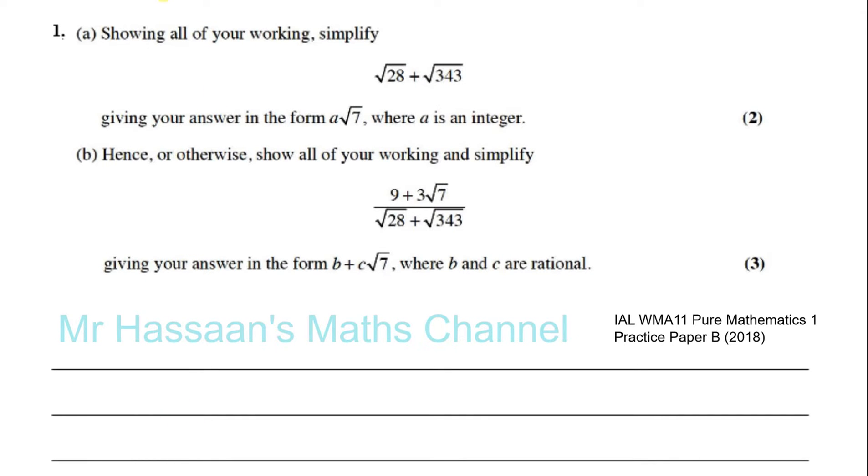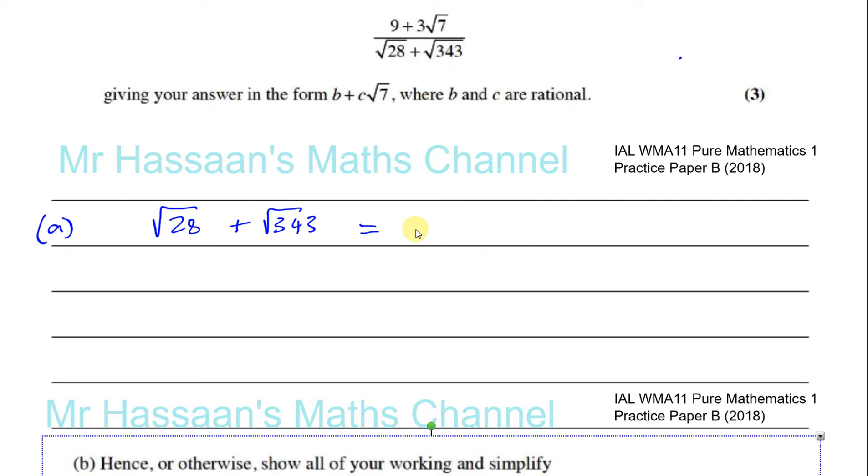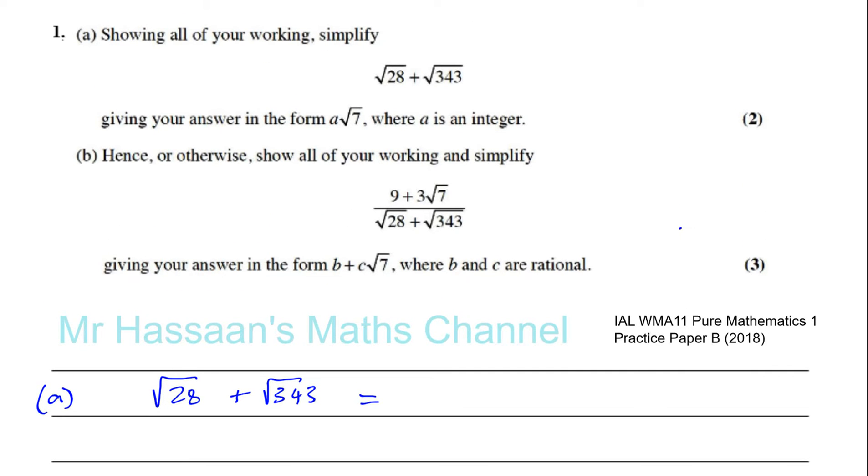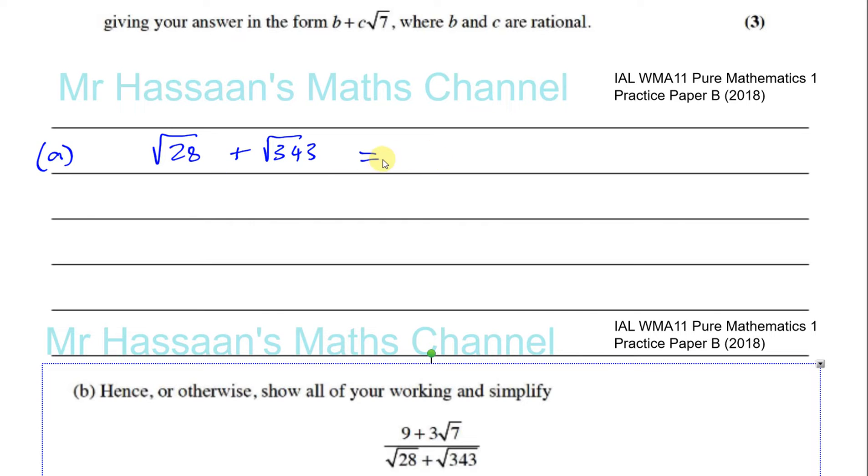So it's very important for you to know how to show your steps, how to show the examiner that you know what you're doing. Use your calculator by all means to check your answer, but that's what's really important here. Now you've got to take root 28 and root 343 and simplify it in the form A root 7. It's pretty obvious that you're going to be left with a 7 as one of the factors for both of these because you're going to be left with something root 7.